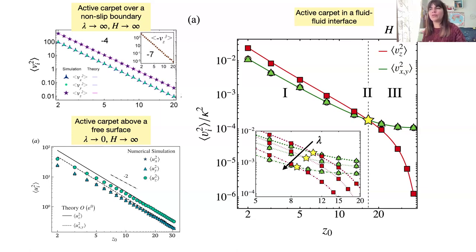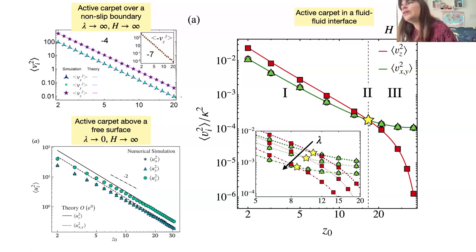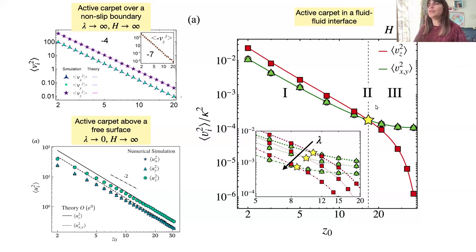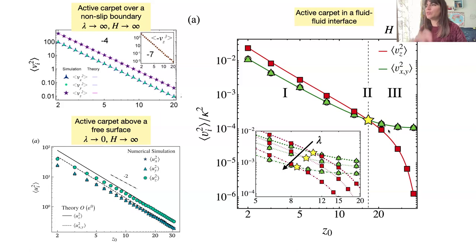The hydrodynamic fluctuations are non-monotonic, and we can find a theoretical crossing point where the fluctuations intersect. Close to the active carpet, vertical fluctuations are more important, but at some point horizontal fluctuations become larger — this transition occurs close to the free surface.